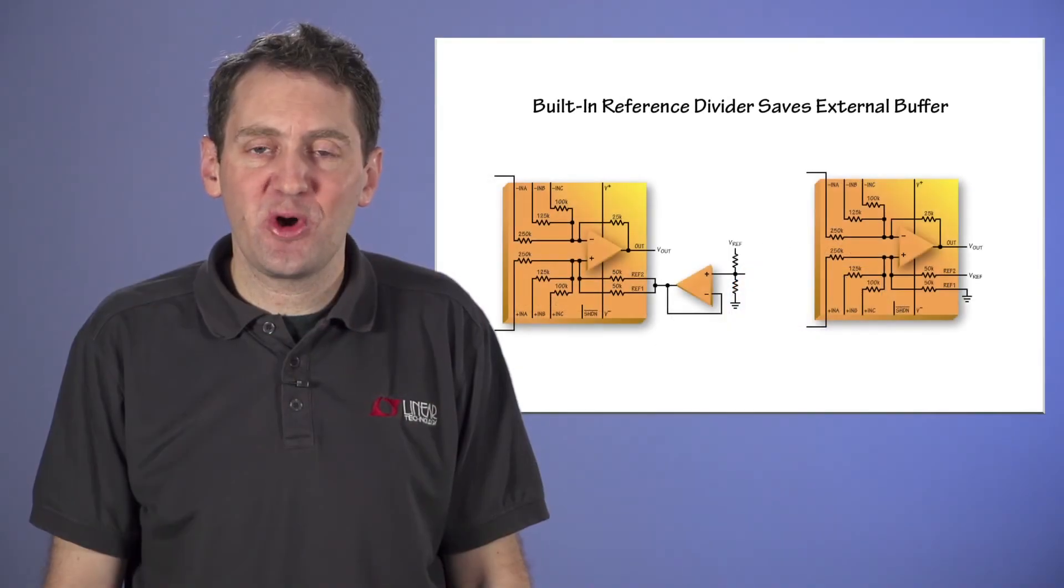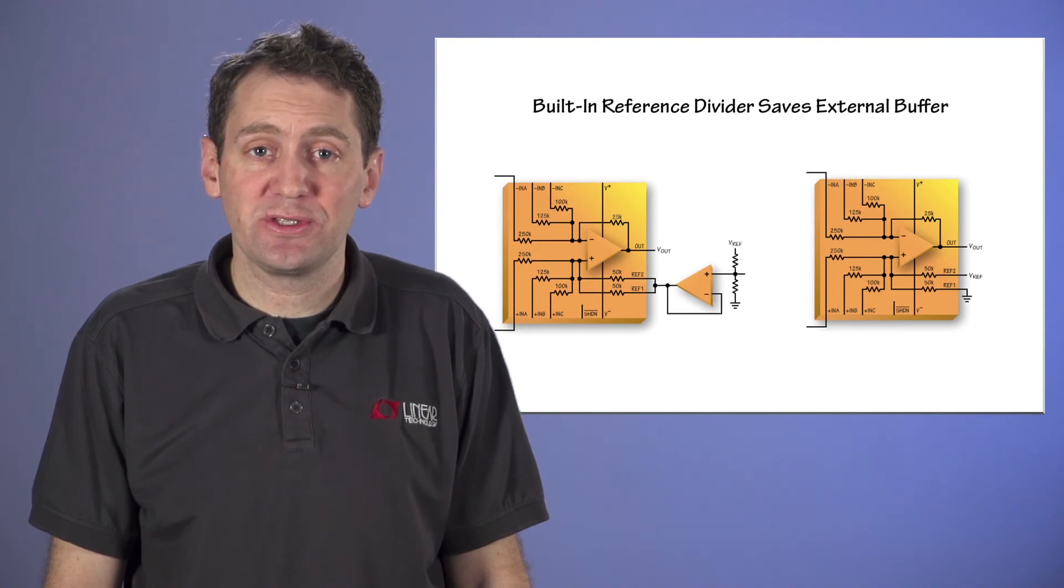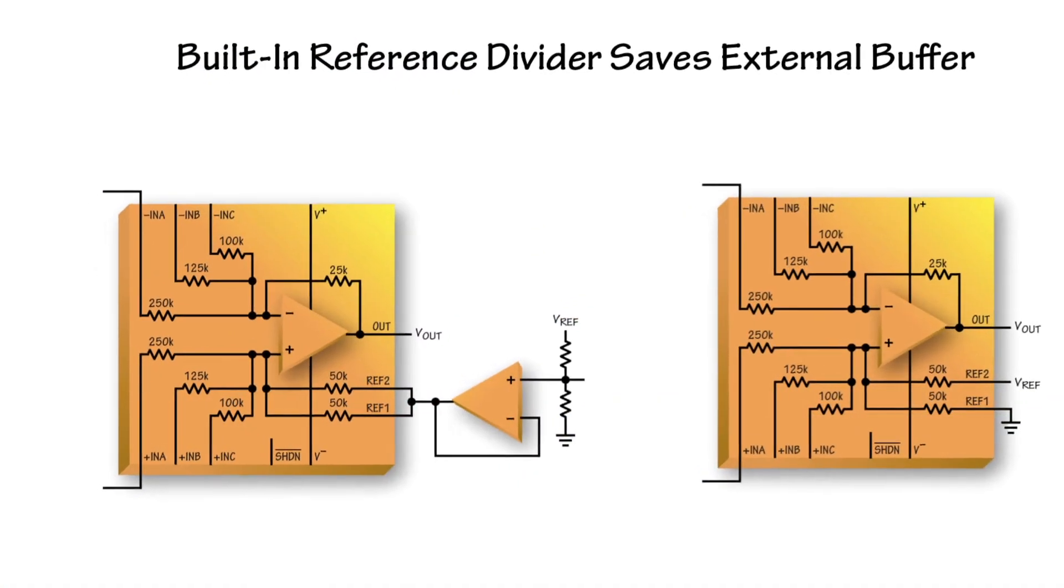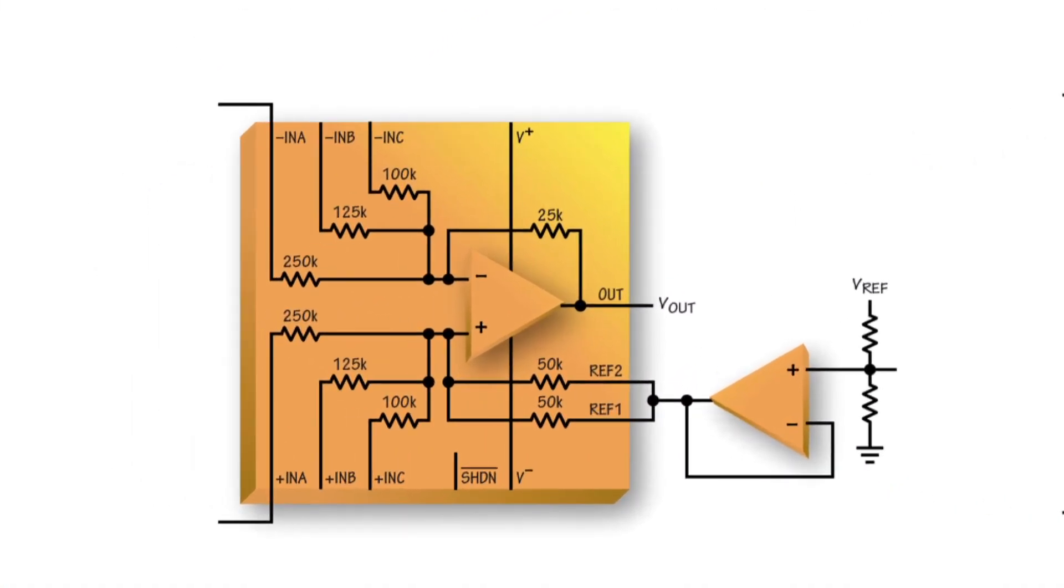Note that we made a small modification to a traditional difference amp circuit as it relates to the ref pin. Traditionally, there is just one ref pin which you should drive with a voltage level that corresponds to the output voltage that you want when the differential inputs are zero.